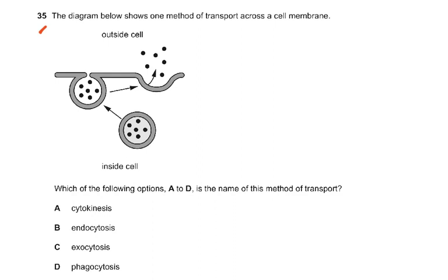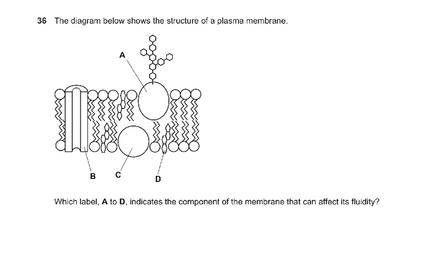Question 35: the diagram shows one method of transport across a cell membrane — something is thrown from inside to the outside. That has to be exocytosis — not very difficult. Question number 36: the diagram shows the structure of a plasma membrane. Which label A to D indicates a component that can affect its fluidity? The answer is D, because cholesterol affects the fluidity of the membrane. There is also a glycoprotein, a protein or enzyme, and a channel protein — but fluidity is affected by cholesterol.